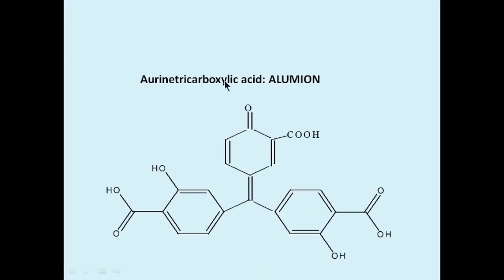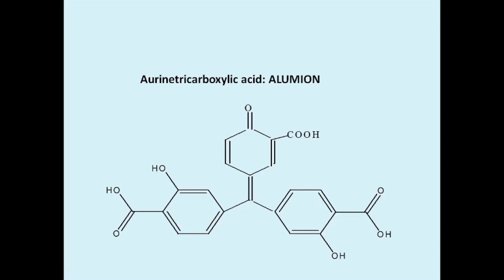Next is aurin tricarboxylic acid, also called alumion. It is a chelating drug and a hexadentate ligand used against mercury, arsenic, and gold poisoning. Its structure shows six donating (coordinating) sites which can bind with any metal ion causing toxicity to the living system.